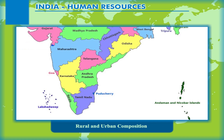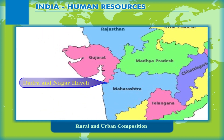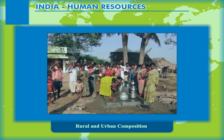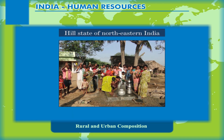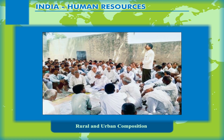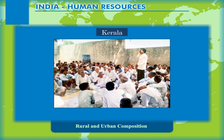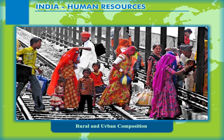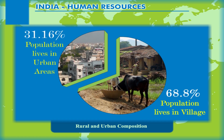The Union territories, on the other hand, have a smaller proportion of rural population, except Dadra and Nagar Haveli at 53.38%. The size of villages also varies considerably. It is less than 200 in the hill states of north-eastern India, western Rajasthan and Rann of Kutch, and as high as 17,000 in the states of Kerala and in parts of Maharashtra. The proportion of urban population in India is 31.16%, which is quite low, but is showing a much faster rate of growth over the decades.